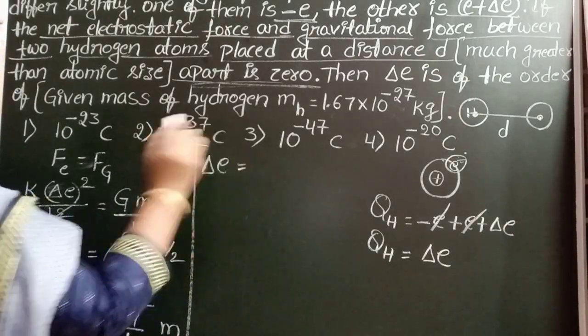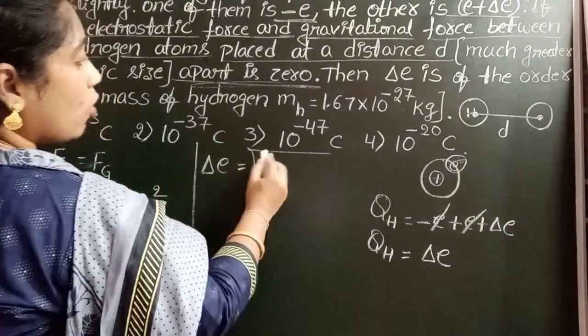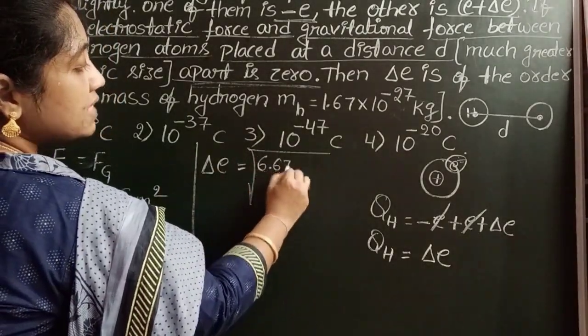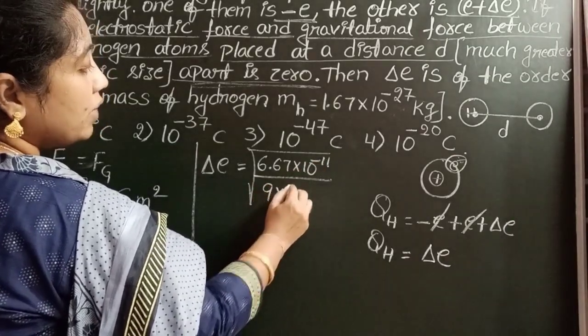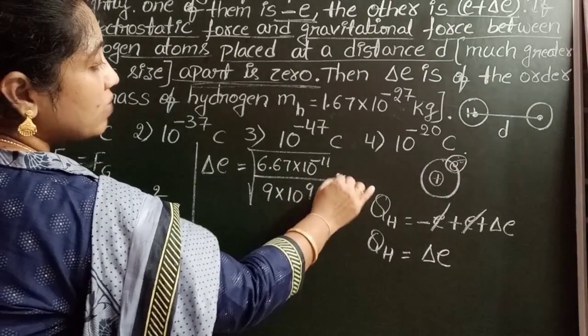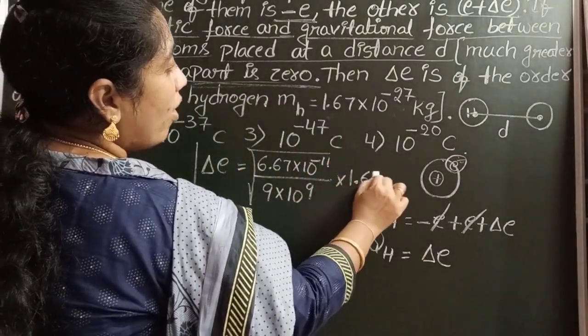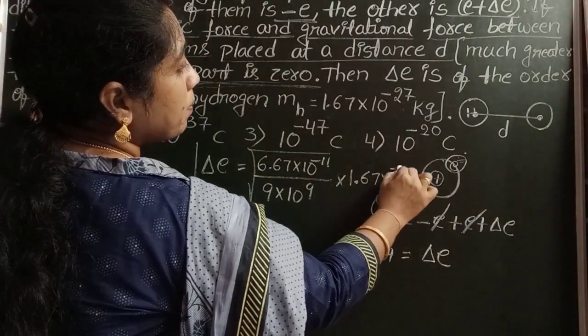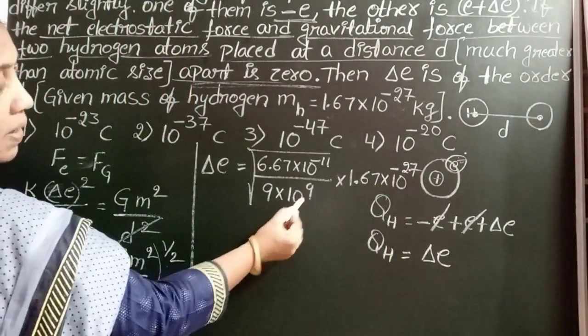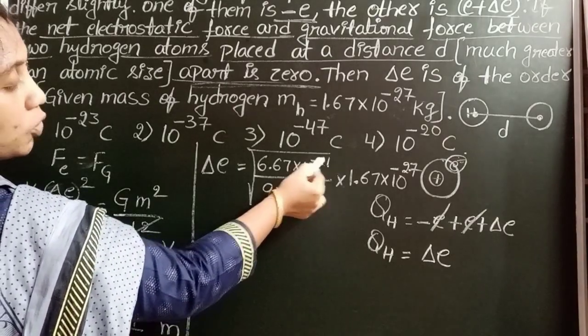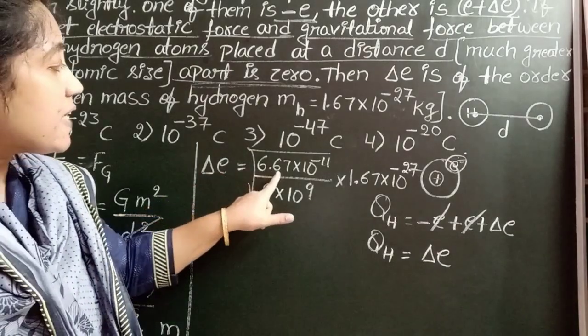Delta E equals universal gravitation constant value 6.67 into 10 power minus 11 and K value 9 into 10 power 9 and given mass of the hydrogen atom 1.67 into 10 power minus 27 kg.